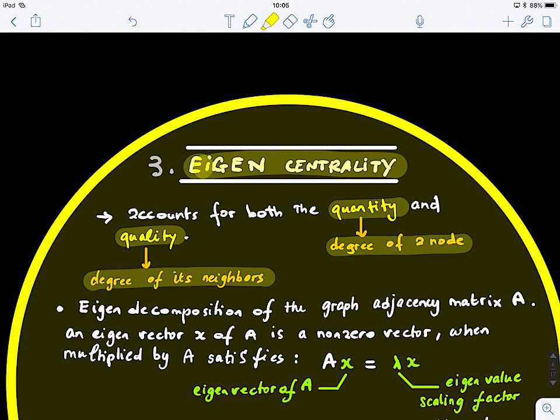You are familiar with eigen decomposition of a matrix. For a graph, the adjacency matrix is the most important representation. By performing eigen decomposition of the graph adjacency matrix A, we find its first principal eigenvector with the highest eigenvalue.